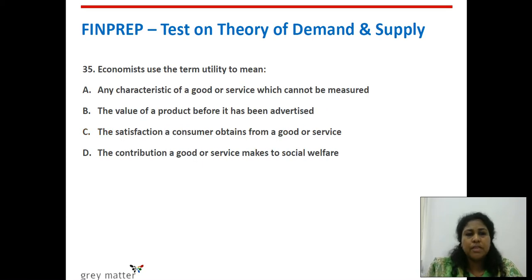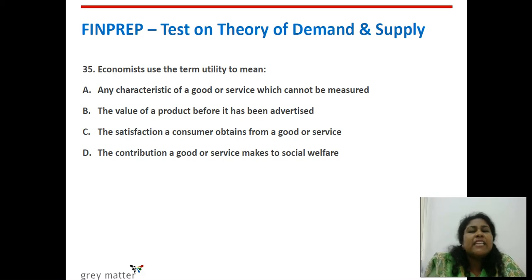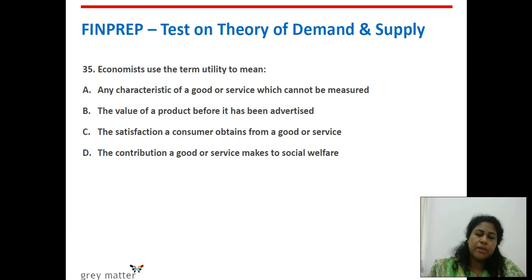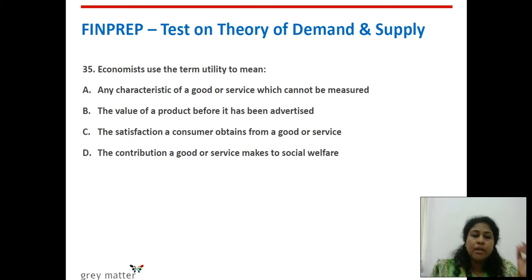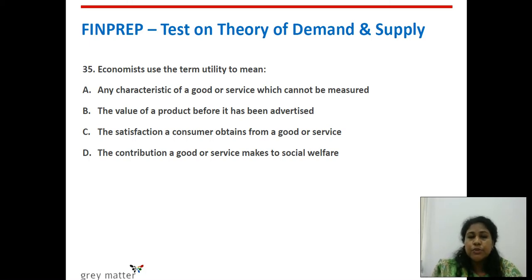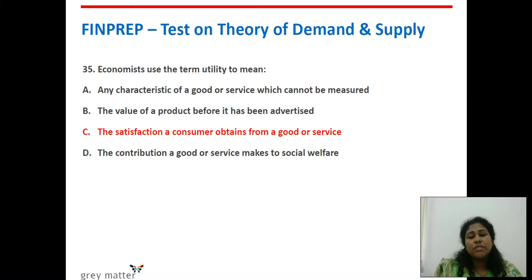Thirty-fifth question: economists use the term utility to mean what? Utility is the satisfaction you derive by consuming a good. Options: any characteristic of a good that cannot be measured; the value of the product before it has been advertised; the satisfaction a consumer obtains from a good or service; the contribution a good makes to social welfare. The right answer is: the satisfaction a consumer obtains from a good or service.